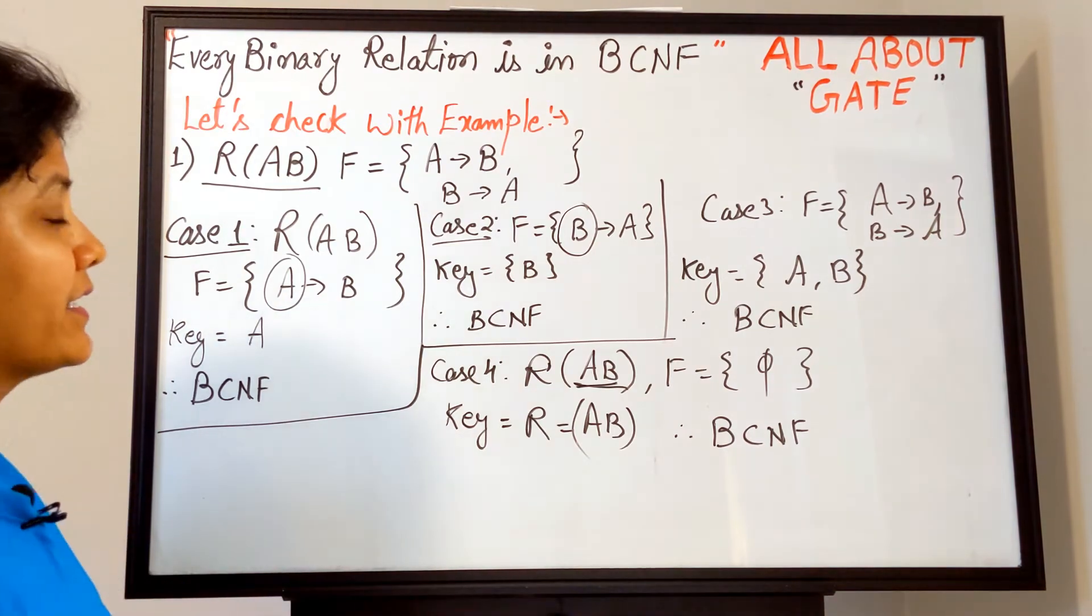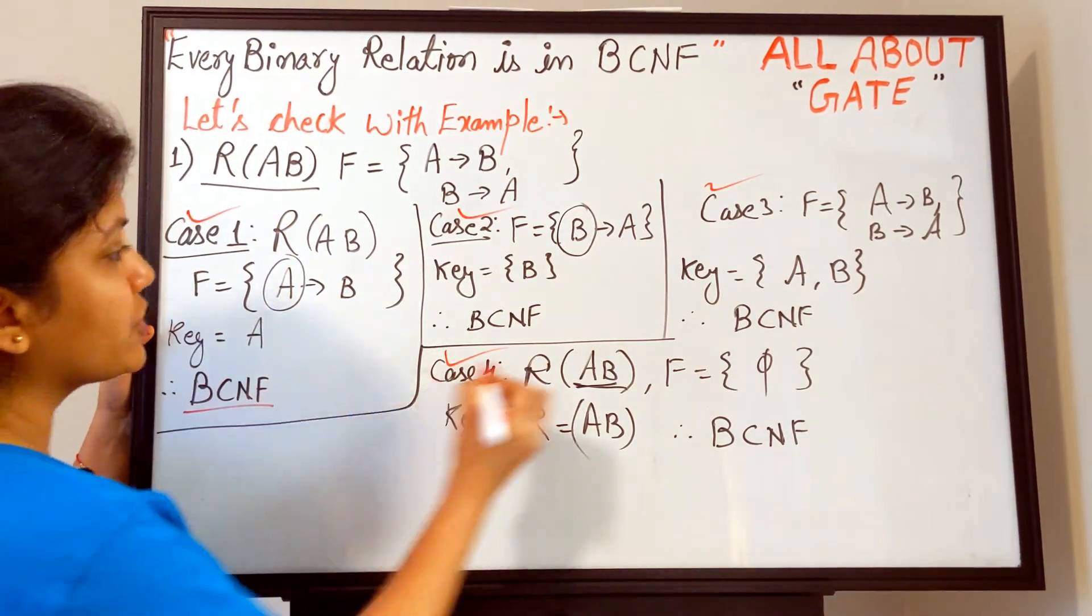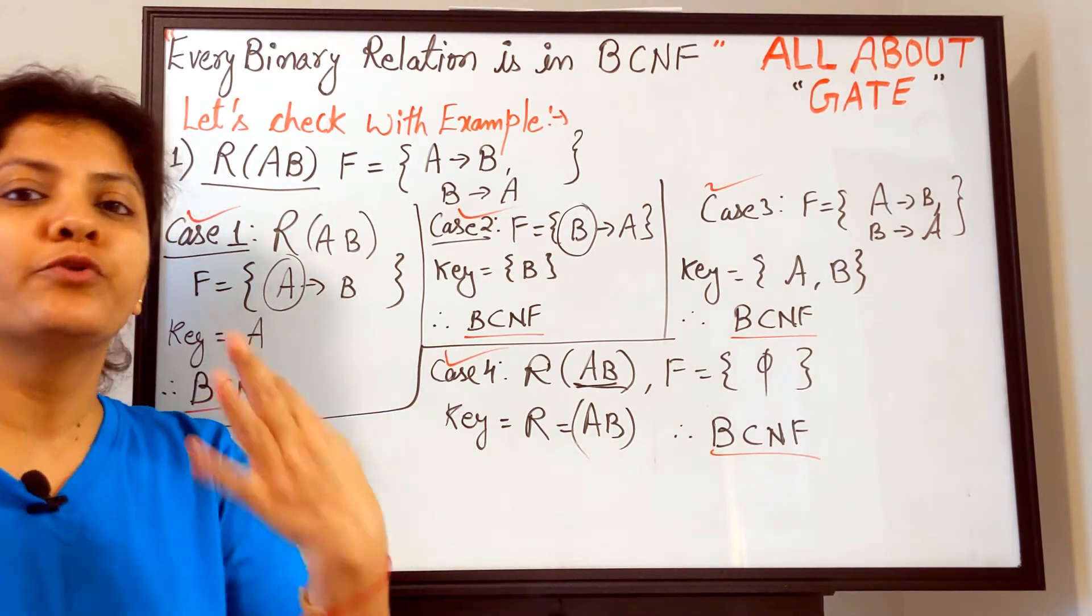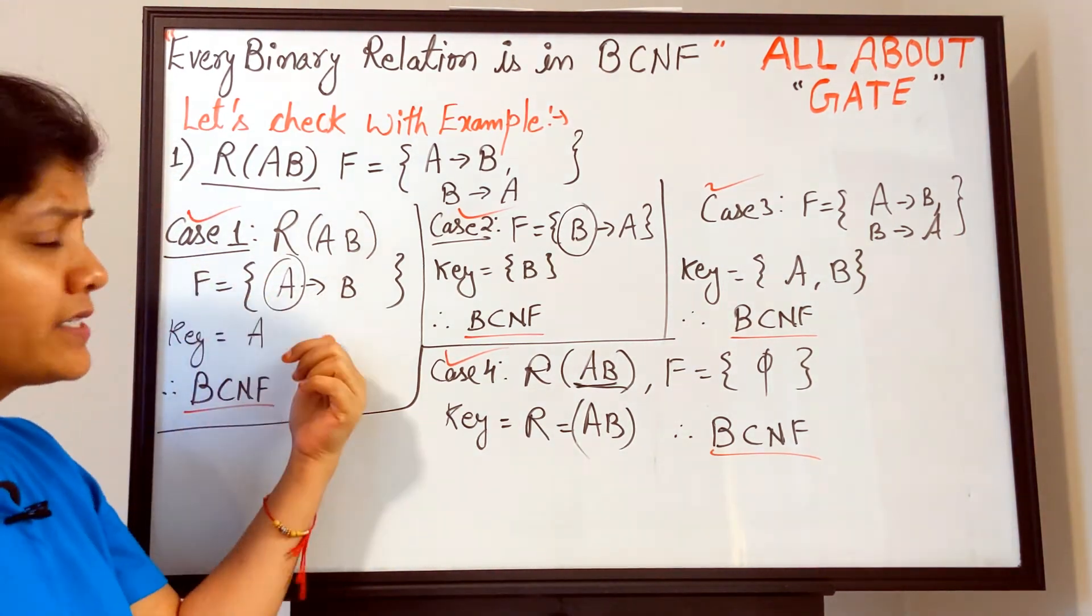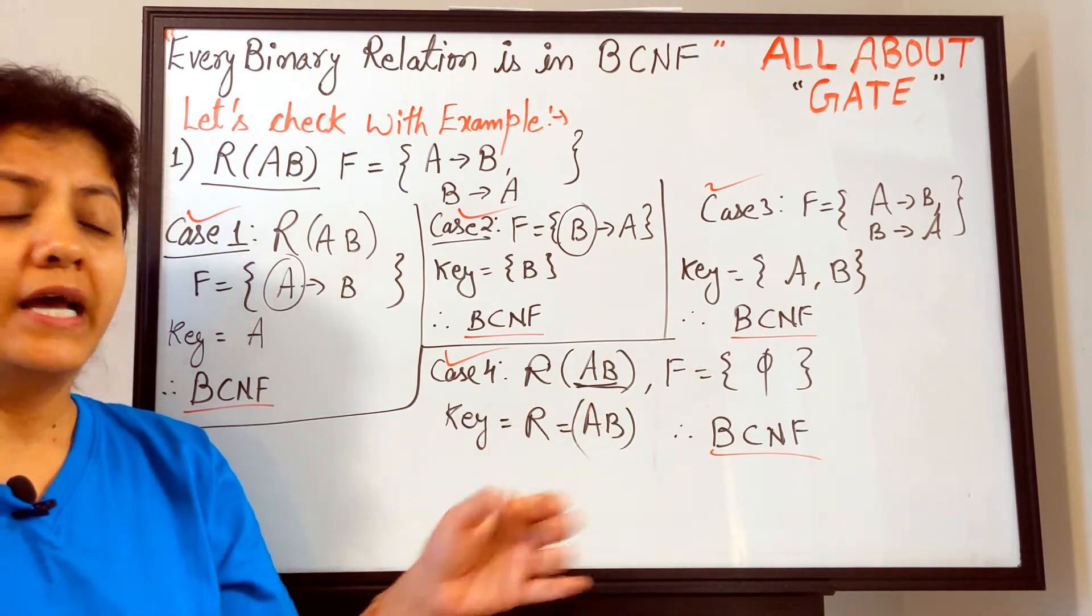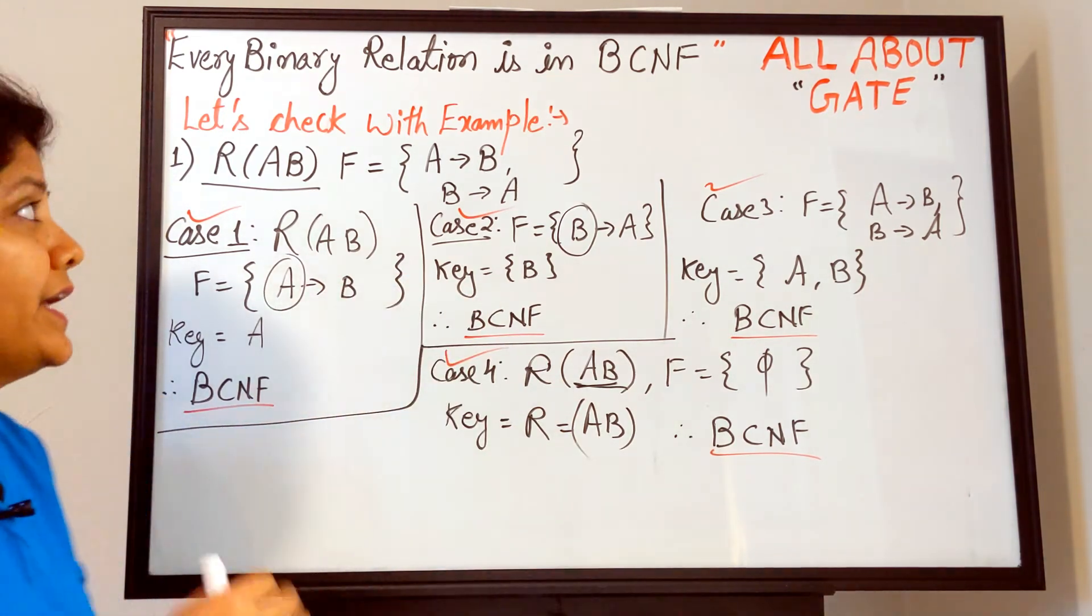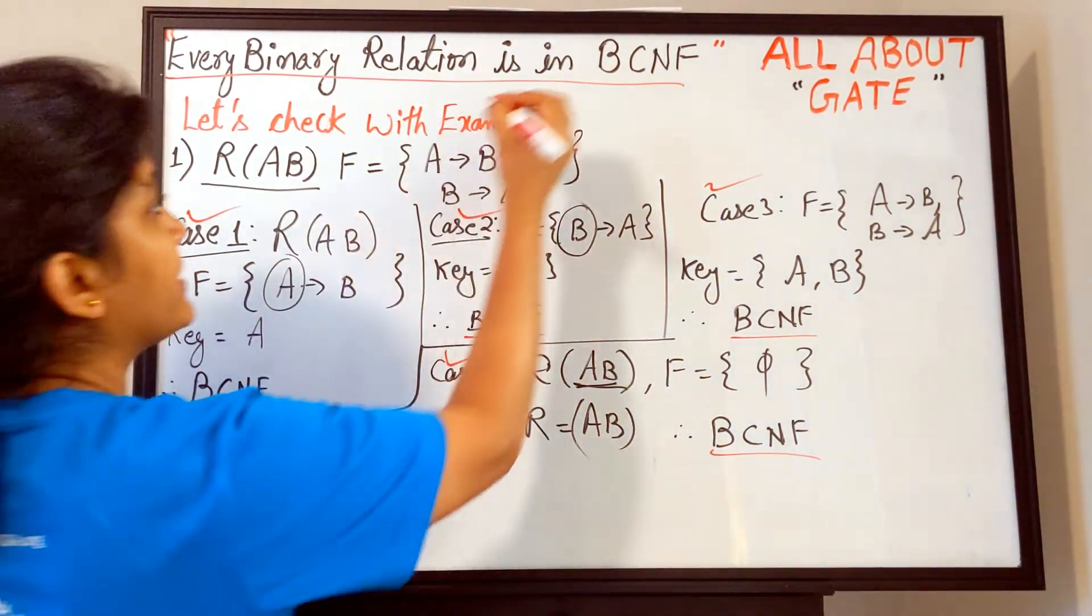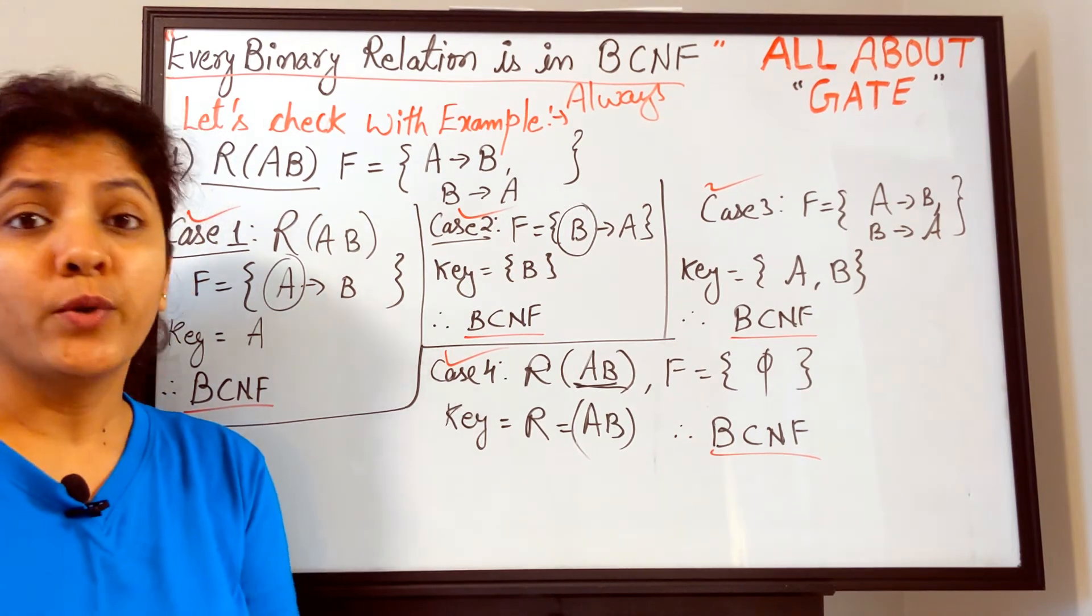Right here in front of you, I took up four cases and you have seen with each case—one, two, three, and four—every time relation is in BCNF. So whatever type of attributes you can include in your binary relation, you will include just two attributes. There are possibilities of this case, this case, this one, or this. There is no other fifth possibility. Only these four are possible, and with these four possible options, as we have proved, it is always going to be in BCNF. So is it not worth to say that yes, every binary relation is always—I think this means to say—always in BCNF.